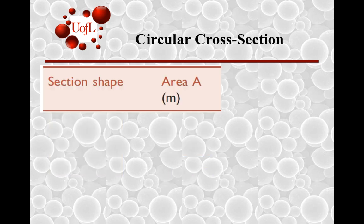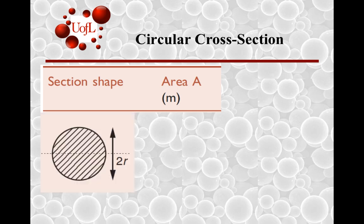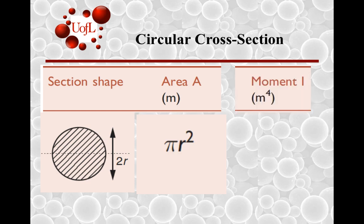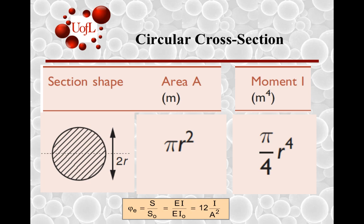Let's take the case of a circular cross-section, another common shape. Let's say that the radius is r, so the area is πr², and the moment I can be represented as π/4 times r to the power 4. The units remain m to the power 4.